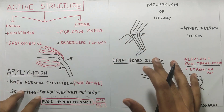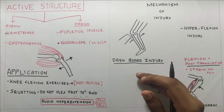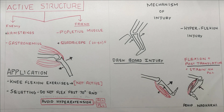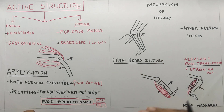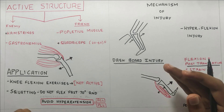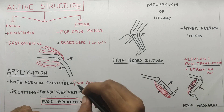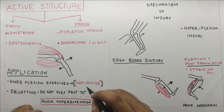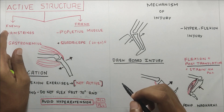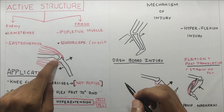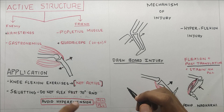Coming to the application of these things: the first thing we should remember is knee flexion exercises. Since the PCL is injured and we are keeping the knee comparatively immobilized, we still need to work on the range of motion and hence we need to flex the knee. Knee flexion exercises are important, but a very important point is that they should not be active — because when you are doing active knee flexion, hamstrings will be activated and as they cause posterior translation, they will strain the PCL. Active hamstring flexion exercises should be avoided.